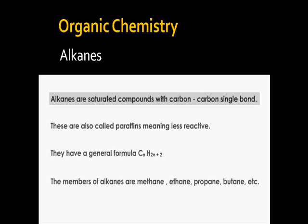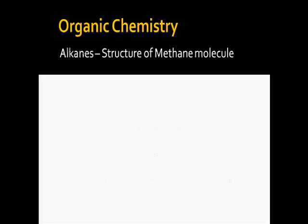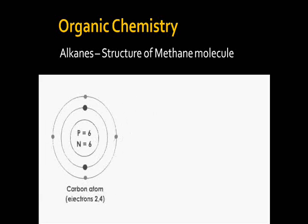The number of hydrogen atoms can be calculated using the formula 2n+2. The simplest members of alkanes are methane, ethane, propane, and butane, meaning they have one, two, three, and four carbon atoms respectively.